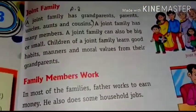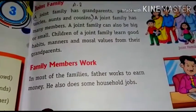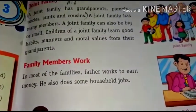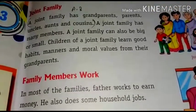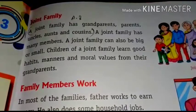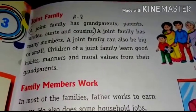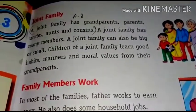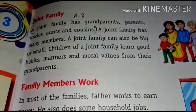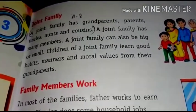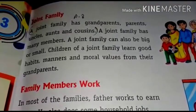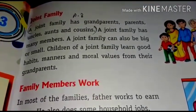Next, we have joint family. A joint family has grandparents, parents, uncles, aunts, and cousins. Grandparents means your dadaji and dadiji. Parents means your father and mother. Uncles means your chacha. Aunts means your chaachi. And cousins means your uncle's and aunt's son or daughter. A joint family has many members.